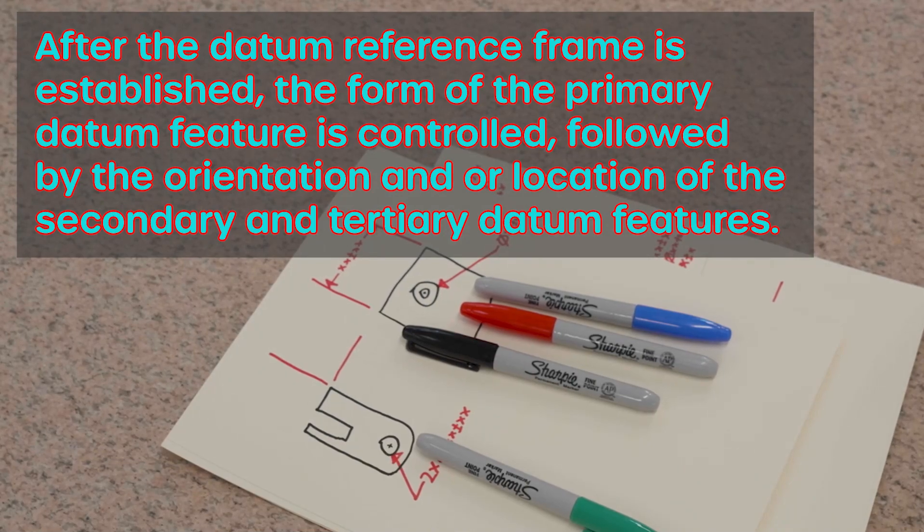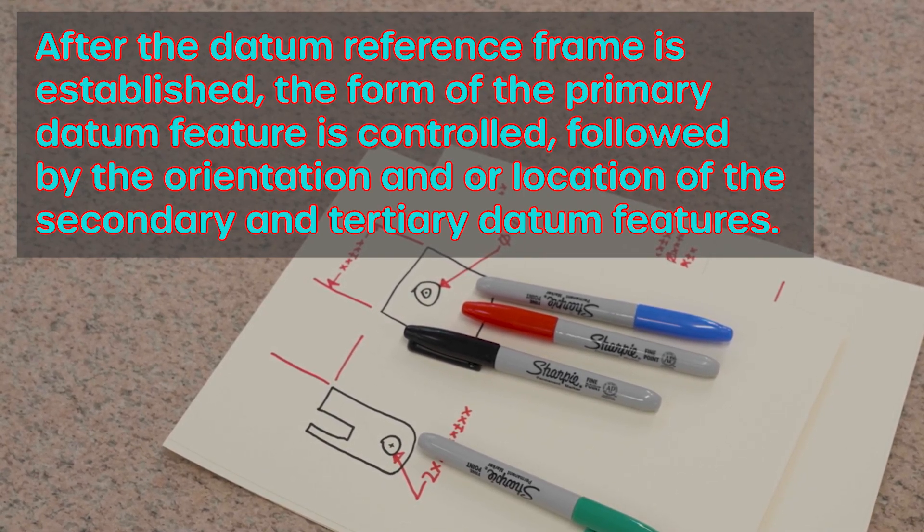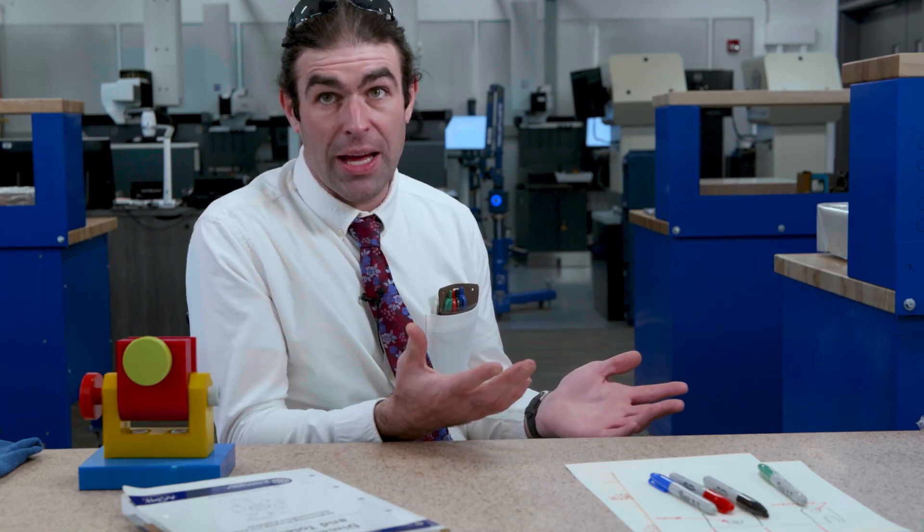The next sentence: after the datum reference frame is established, the form of the primary datum feature is controlled, followed by the orientation/location of the secondary and tertiary datum features. It's really important that your datum features are good features that are relatively flat and square if they're surface planes. The reason is that you're taking your measurements from those features. So if the place you're taking measurements from is very irregular and uneven, you're going to get bad measurements.